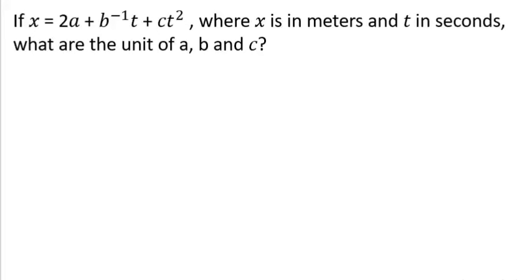Hello everyone, so let's see how we can answer this question. If x equals 2a plus b to the power minus 1 t plus ct squared, where x is in meters and t is in seconds, so x can be the displacement or the distance or t is the time, what are the units of a, b, and c?